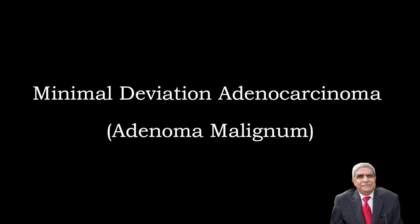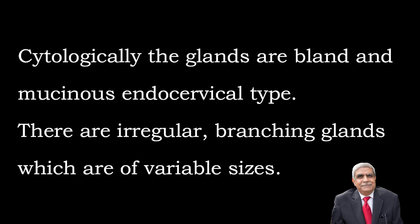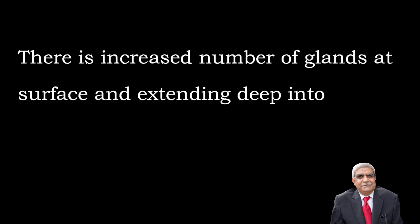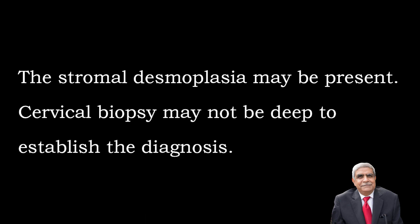There is another subtype known as minimum deviation adenocarcinoma, also called adenoma malignum. Cytologically, the glands are bland and of mucinous endocervical type. There are irregular branching glands of variable sizes, with increased number of glands at the surface extending deep into the wall of the cervix, greater than 5 mm. The stroma shows desmoplastic reaction. Cervical biopsy may not be deep enough to establish the diagnosis.